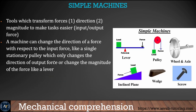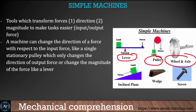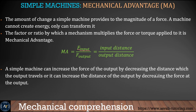Simple machines are machines that make your life simpler or easier. There are basically six different types of simple machines: lever, pulley, wheel and axle, inclined plane, wedge, and screw. We'll learn the mechanical advantage of each of those simple machines.